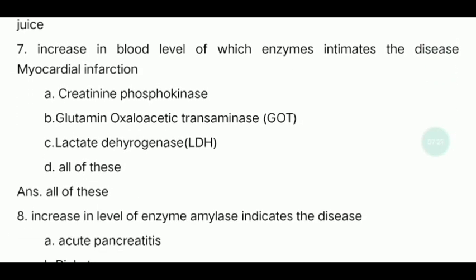Seventh question: Increase in blood level of which enzymes indicates myocardial infarction? The answer is all of these: creatine phosphokinase, glutamic oxaloacetic transaminase (SGOT), and lactate dehydrogenase. If all these enzyme levels are increased in our blood, we can diagnose myocardial infarction.